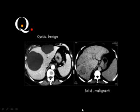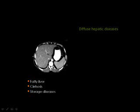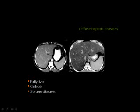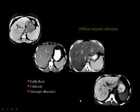The liver density should normally be similar to that of the spleen. If the liver appears darker than the spleen, this is fatty liver — fat infiltration may be mild or severe. If the liver is brighter or denser than the spleen, something has been added to the liver parenchyma — possibilities include glycogen storage disease, hemochromatosis, or hemosiderosis.